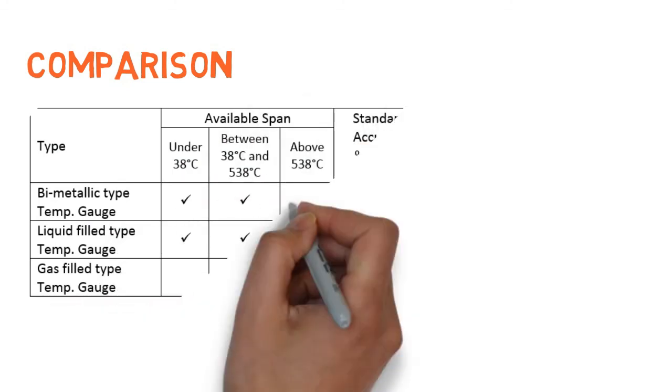The table below shows a comparison between bi-metallic and filled type temperature gauges.